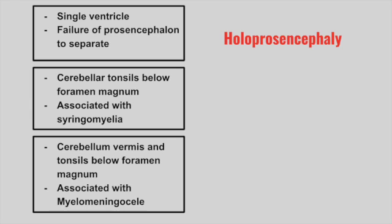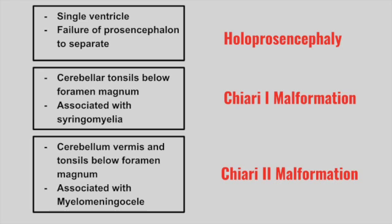Next is a patient with cerebellar tonsils below the foramen magnum, associated with syringomyelia. This is Chiari type 1 malformation. The next patient has cerebellar vermis and tonsils below the foramen magnum and also has an associated myelomeningocele. This is Chiari type 2 malformation.